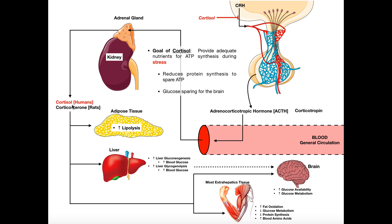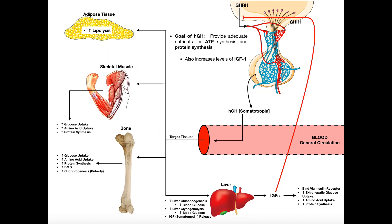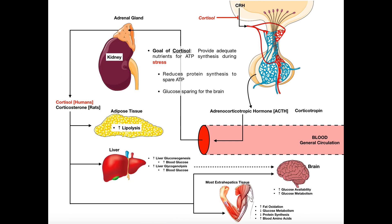So what are the functions of cortisol? The functions of cortisol are going to have to do with the stress response. The first part of cortisol's overall goal is going to resemble the goals we had for growth hormone and thyroid hormone, but there's one major difference. The goal of cortisol is to provide adequate nutrients for ATP synthesis, just like we saw before. However, this is more focused during a stress response.